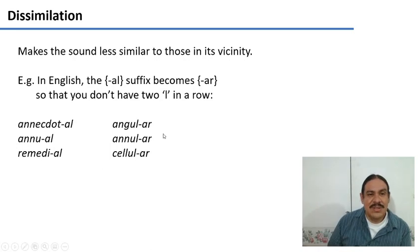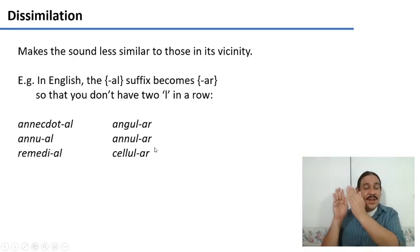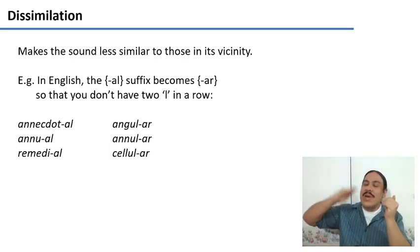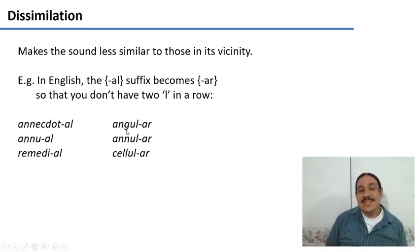As in angular, annular, and cellular. This process is called dissimilation because you essentially have two l's in a row. You'd have angulal, and then you take the second l and make it something different so that precisely you wouldn't have the two l's in a row. This is fairly common in English and Spanish. We also have this process where if we have two l's or two r's in a row, one of them regularly changes.